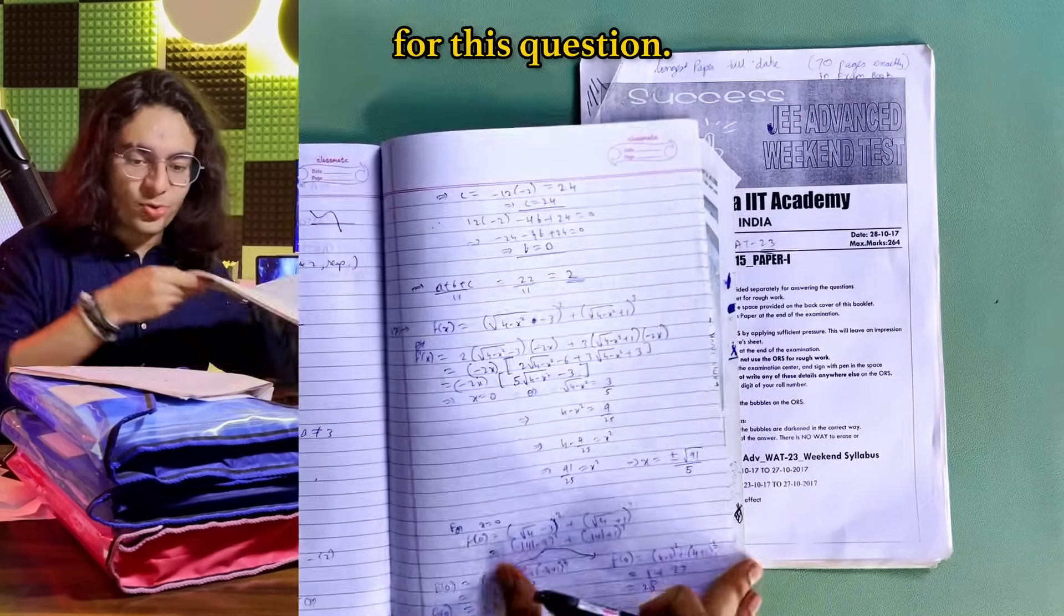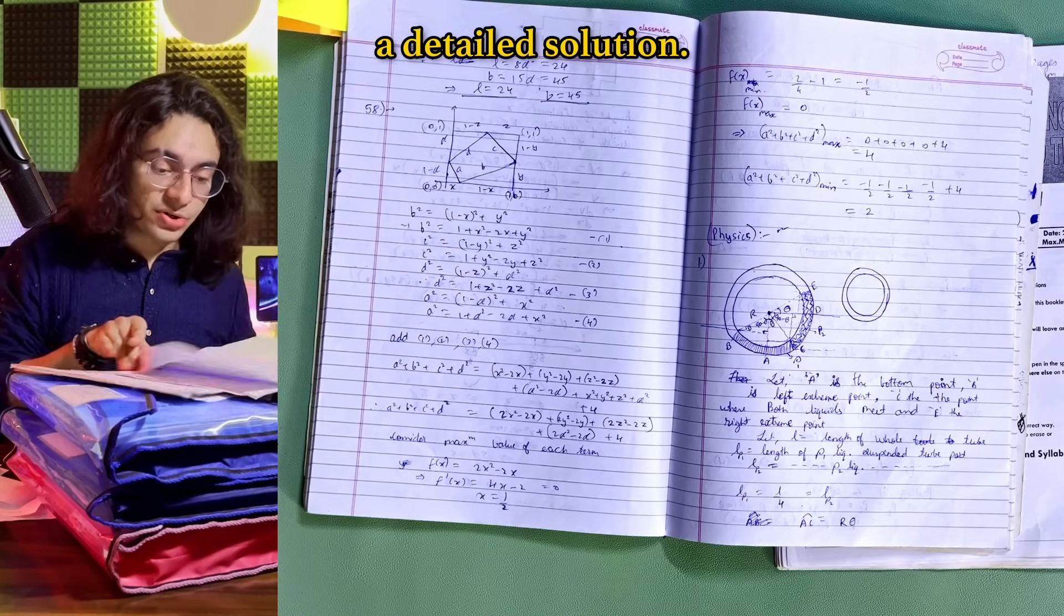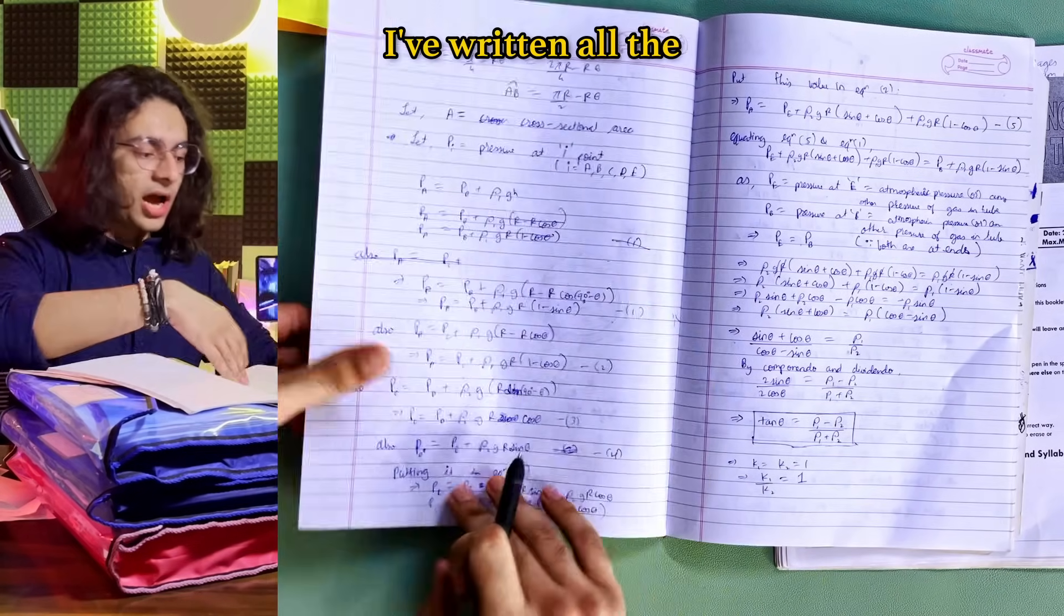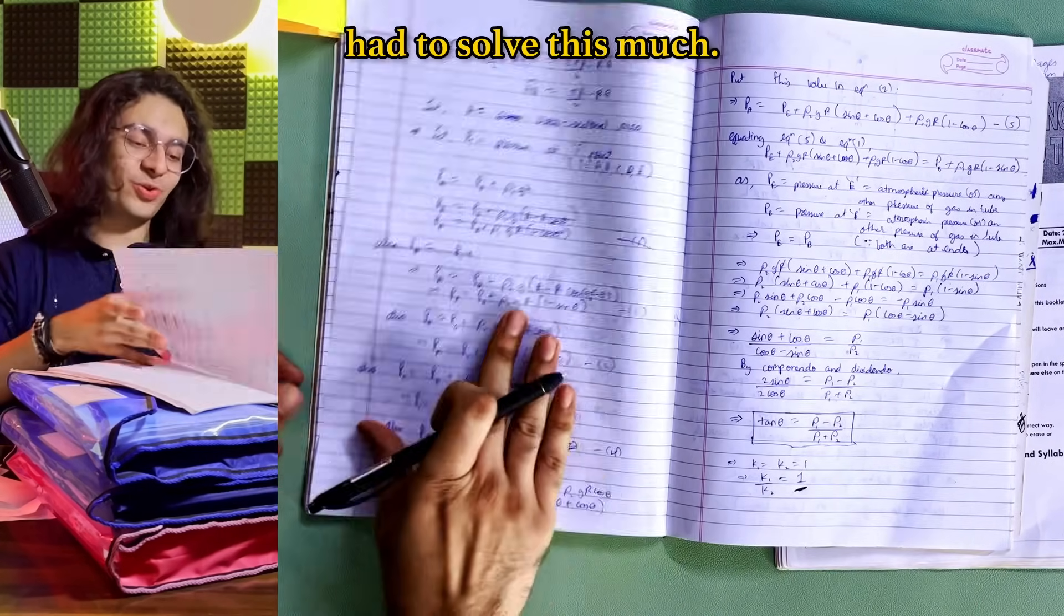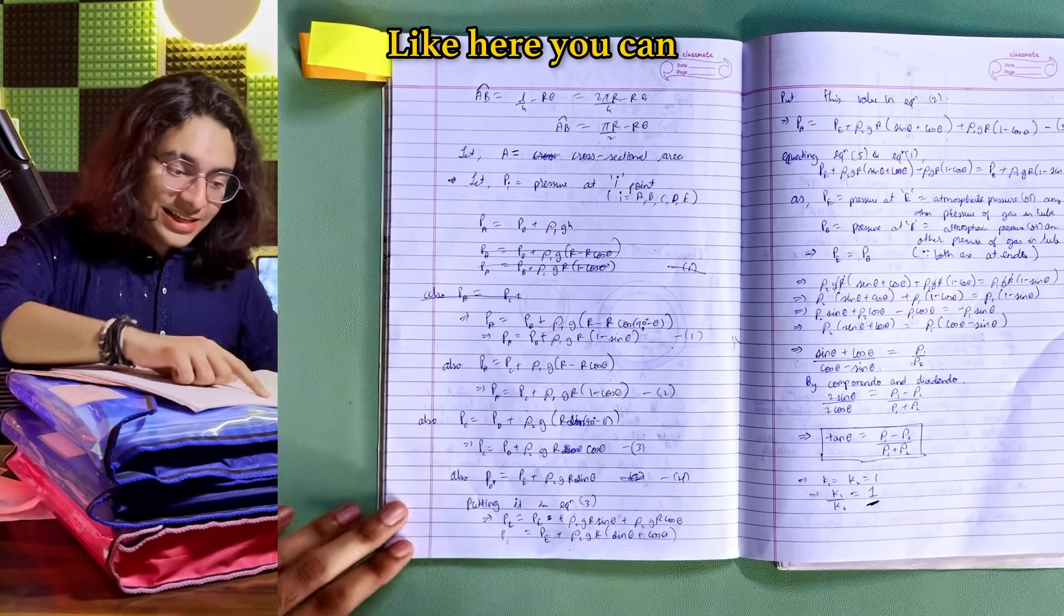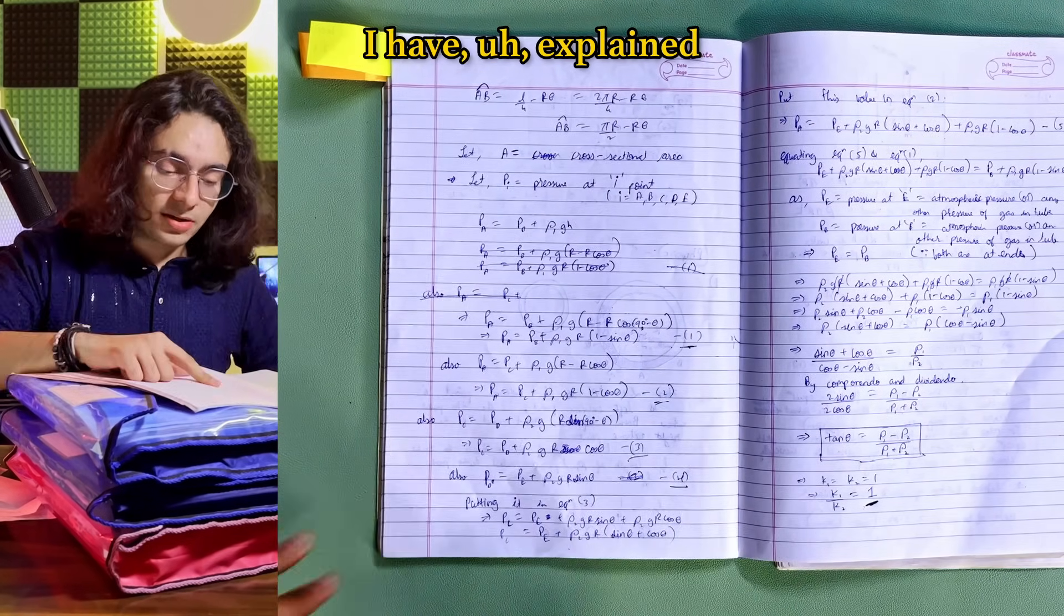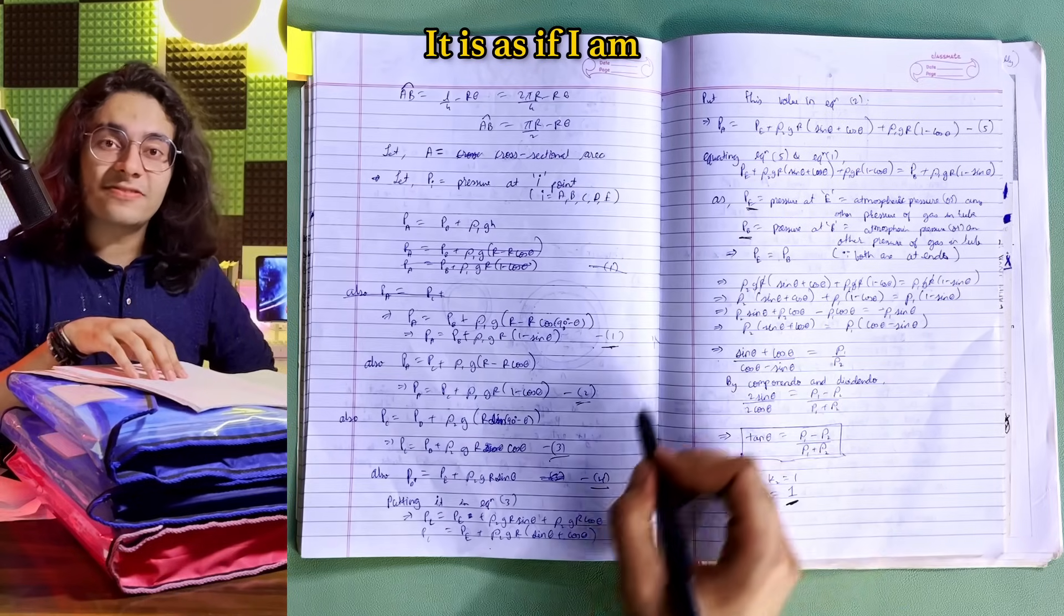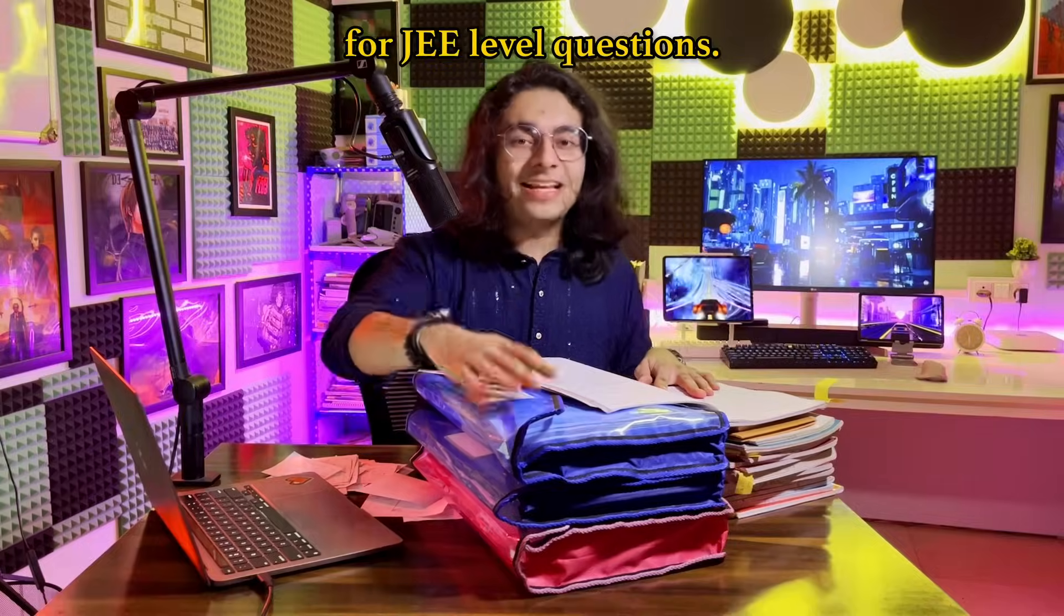So let's just have a look at the solution that I have written for this question just to give an example to you to what level I used to write a detailed solution so here you can see the solution here I have drawn the diagram and just have a look at the solution from here I have written all the details and to the last step the answer is one just to get the one I had to solve this much none of the steps are skipped each step is explained with detail like here you can see this value is an equation two this is an equation one I have named each equation I have explained each term so that I understand each term by myself it is as if I am writing a proper subjective solution for 12 board exams imagine writing 12 board exams level solution for JEE level questions.